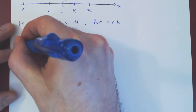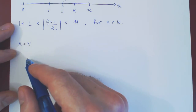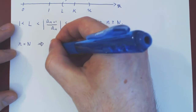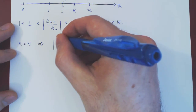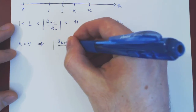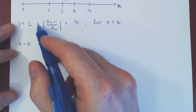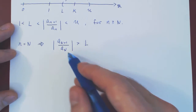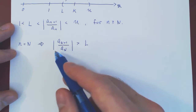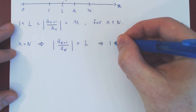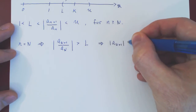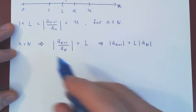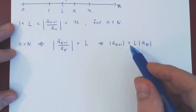Let's see what happens if we take n to be N and then N+1 and so forth — something interesting will come out of this inequality. Replacing lowercase n by uppercase N, we have |a_{N+1} / a_N| > L. Multiplying across by |a_N|, this shows that |a_{N+1}| > L · |a_N|. And note that L is larger than 1 — keep this in mind, it is very important.